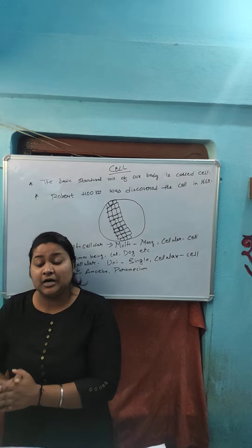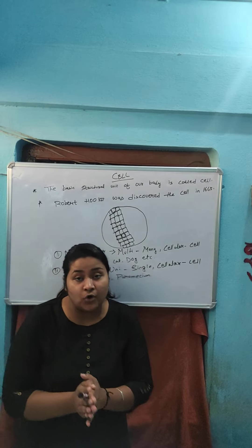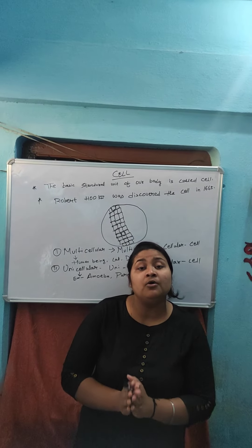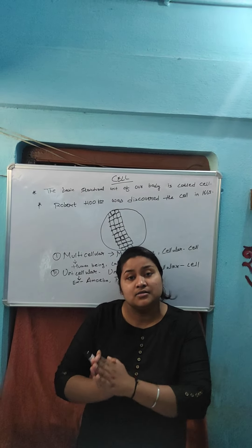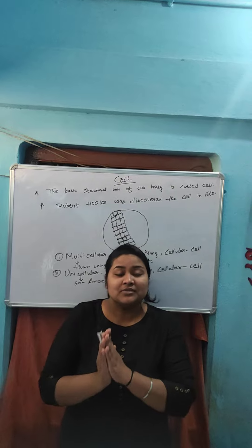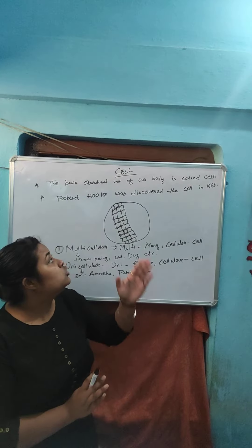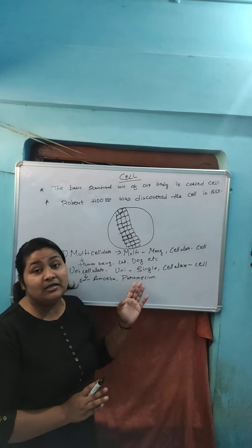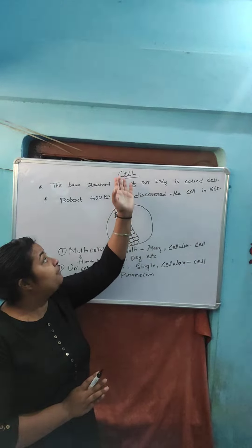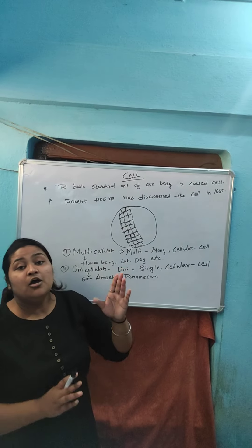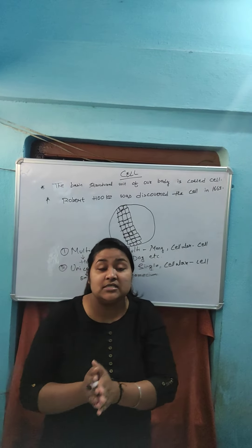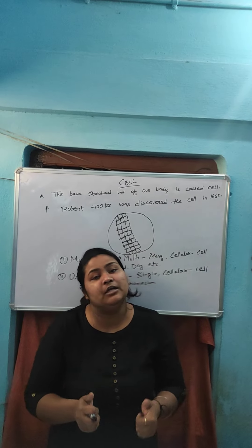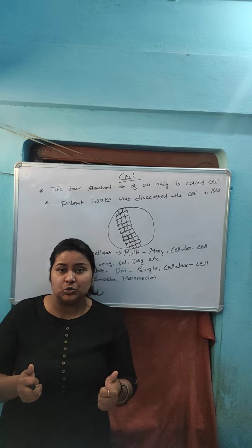The functions in multicellular organisms are carried out by groups of specialized cells forming different tissues. Tissues in turn form organs, and organs form organ systems. The rest of the topics on cells will be discussed in the next video. Hope you like the video. Thank you.